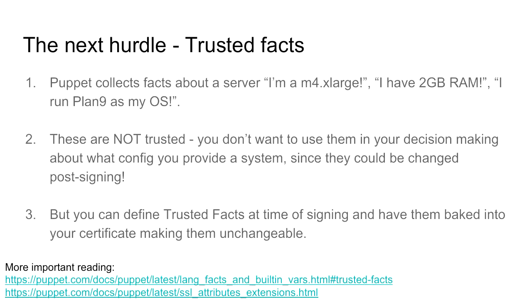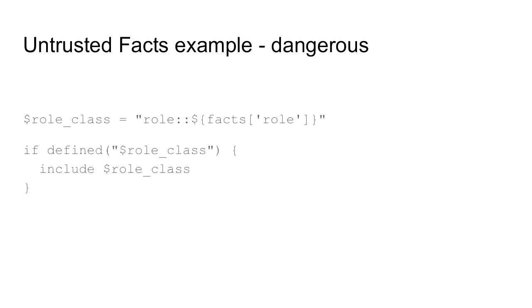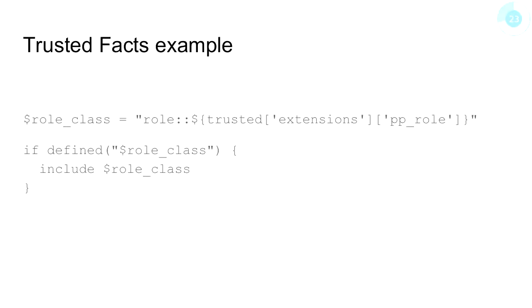There's another big hurdle: facts can't be trusted in Puppet. A fact is like an attribute about a server — this much RAM, this operating system — but they're not trusted because they can be changed at any time. If you do something like 'if the role fact equals web server, include web server configuration', a server that's gained access with a legitimately signed certificate but is actually a different kind of server can change that fact and grab the wrong configuration.